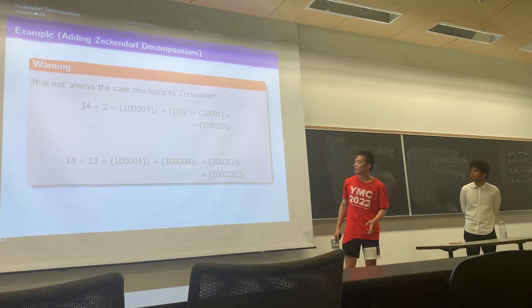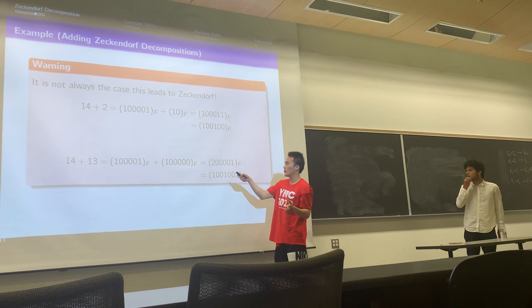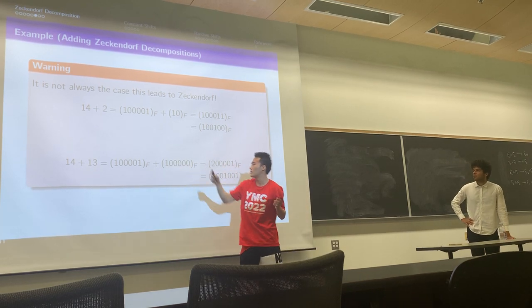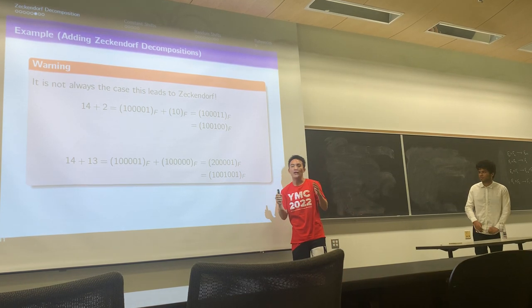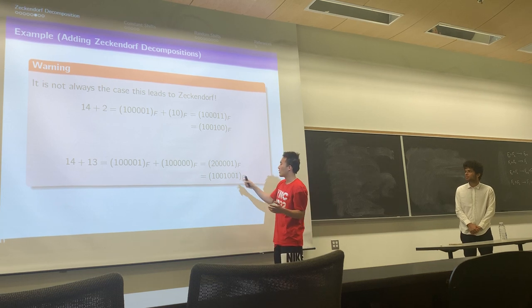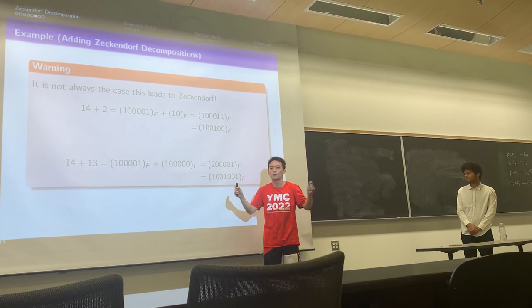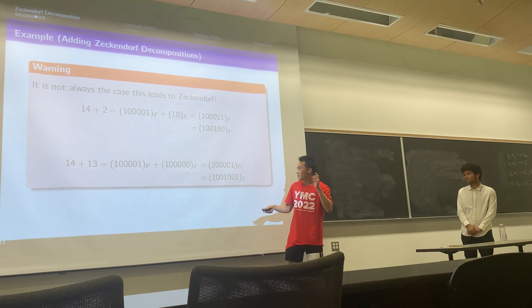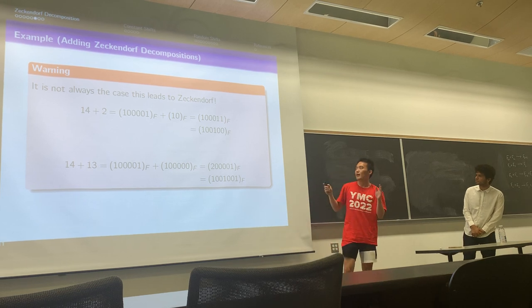Here's another bad example. You add these two Zeckendorf decomposition trivially, you get a 2 in the decomposition, which is something we don't allow, because in the definition we only allow zeros and ones in the decomposition. Here we need to do something with these two. We want to split it into two Fibonacci numbers to make the legal Zeckendorf decomposition.